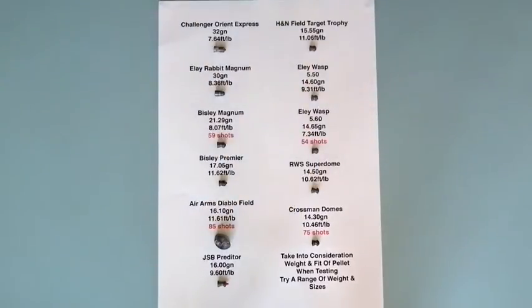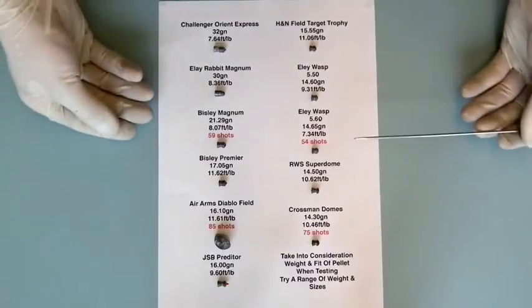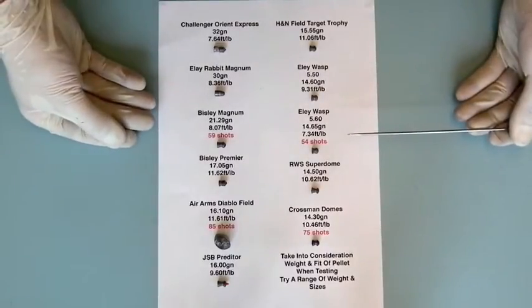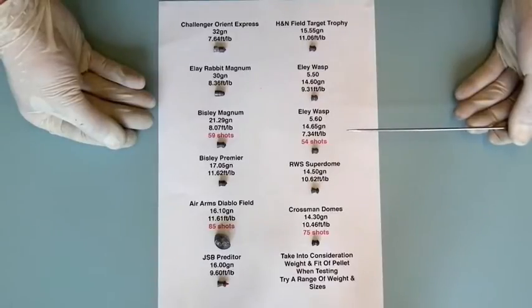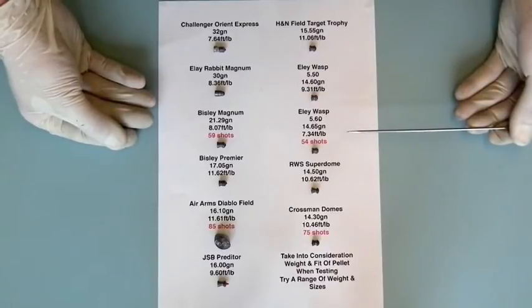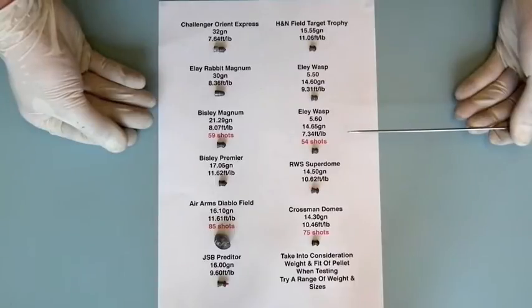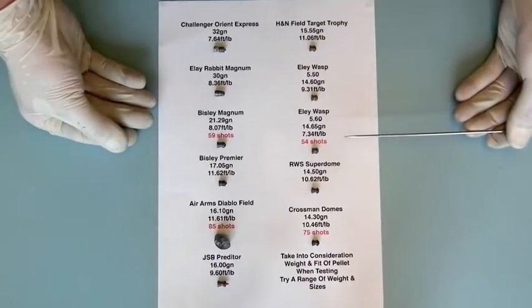This is also something you have to take into consideration with your air rifle, whether it's spring powered, pump up pneumatic, or pre-charged pneumatic. The size, weight, and fit of the pellet can have a great effect on the performance of your air rifle and also, particularly with the fit in the barrel, accuracy.